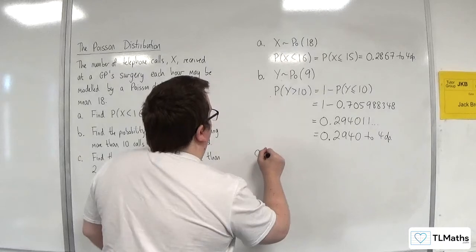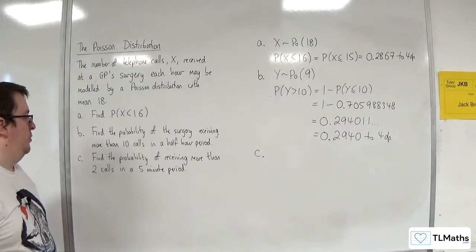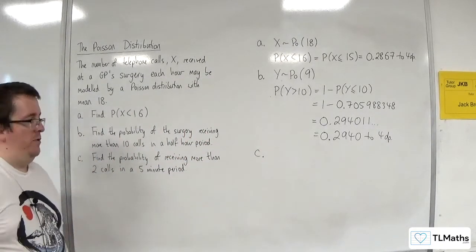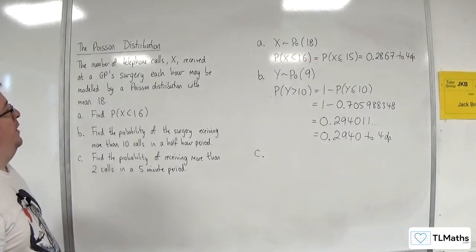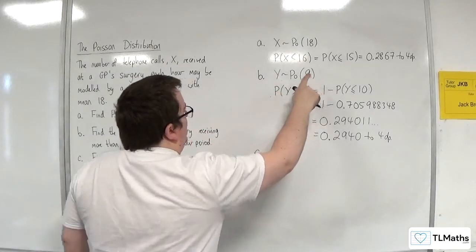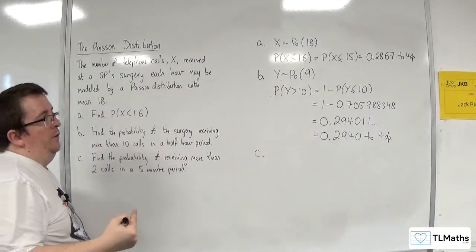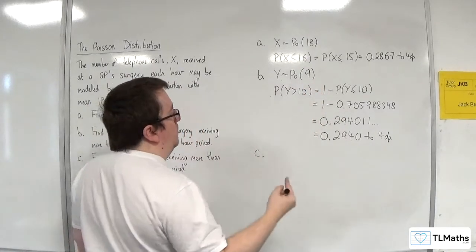OK, part C. Find the probability of receiving more than two calls in a five minute period. So the time frame has changed again. So we've gone from, now that was in 30 minutes, now down to five minutes. So we need to divide that by 6. So 9 divided by 6 is 1.5.